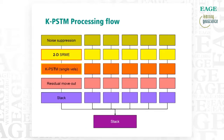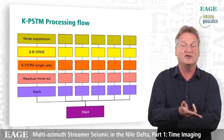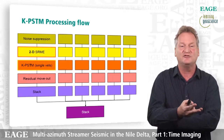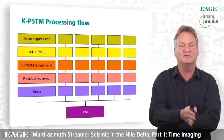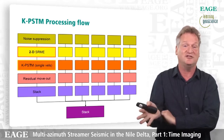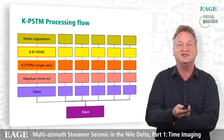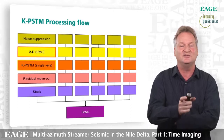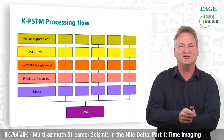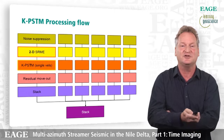The processing flow: we all know how to process towed-streamer data, and that's really what we're doing here. Starting with general noise suppression, then we run demultiple — in this case a 2D SRME algorithm — then a Kirchhoff time migration, picking residuals, and stacking. It's a standard towed-streamer processing sequence, only in this case we've got six datasets so we run it six times. The one thing we do slightly differently is that for the migration we used the same single velocity field for all six surveys.